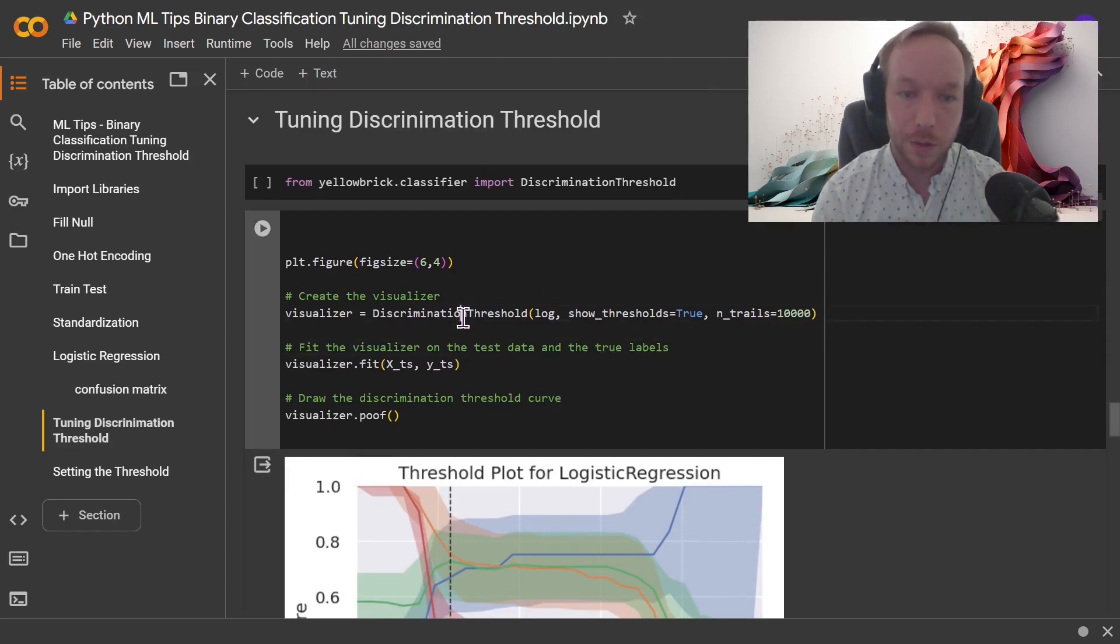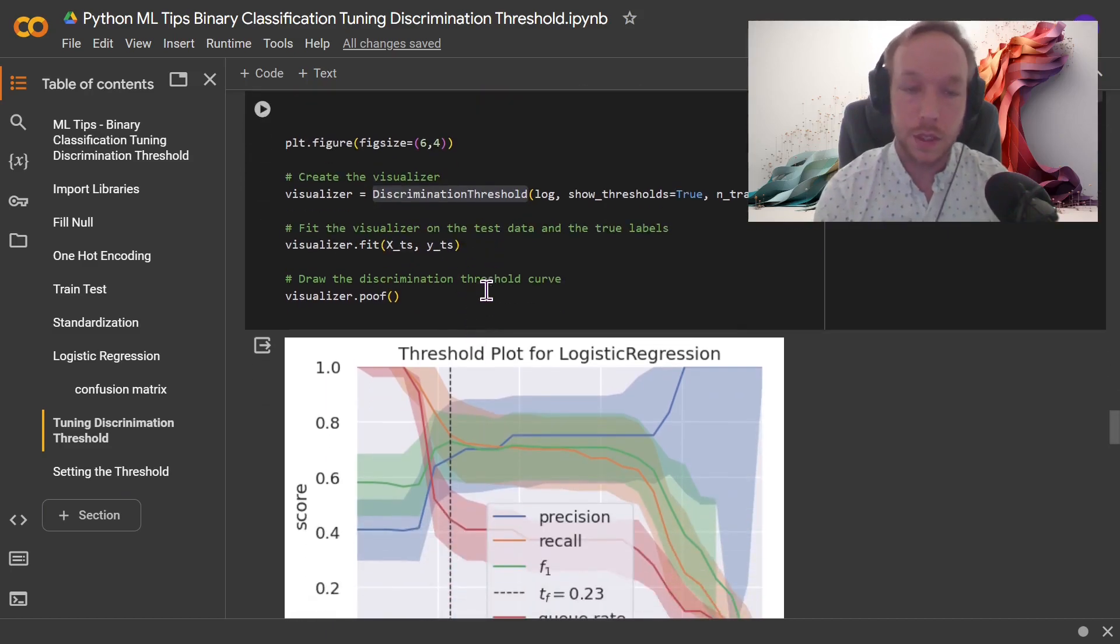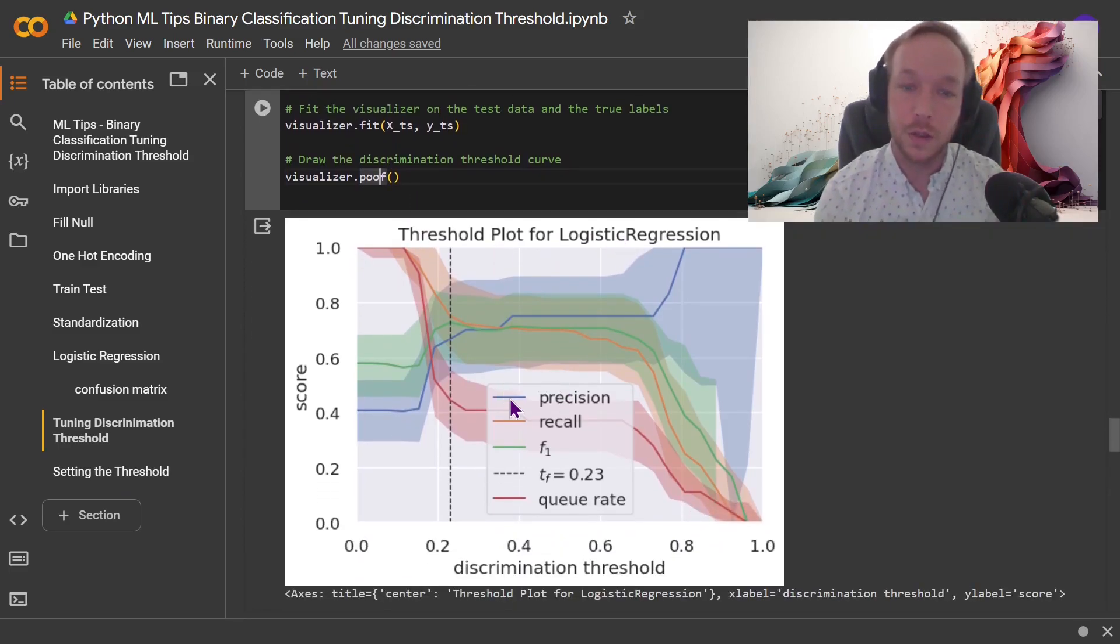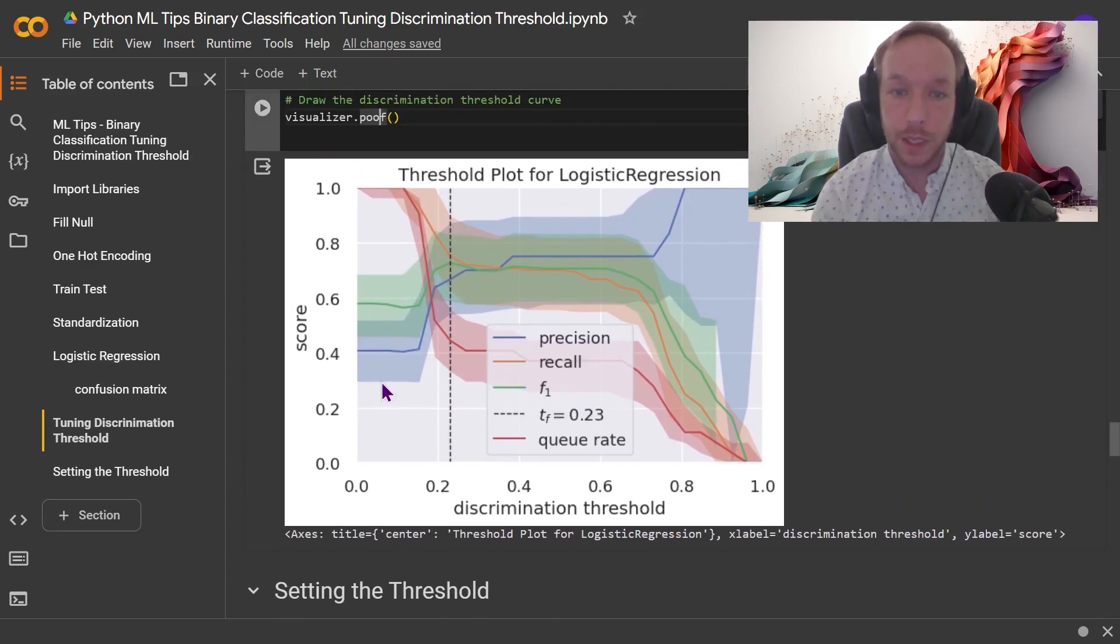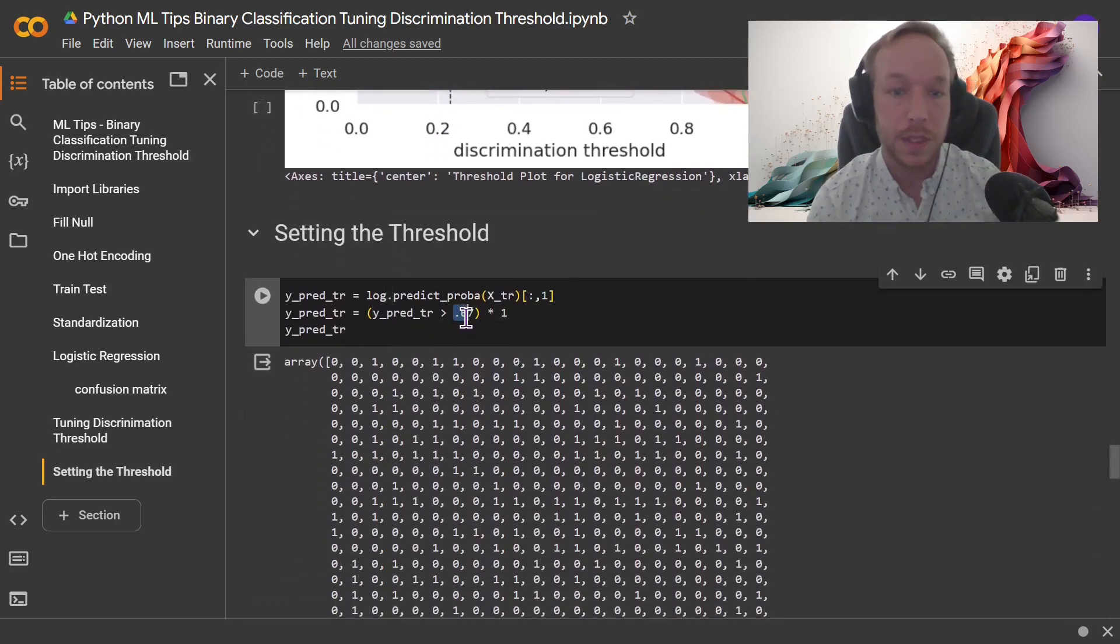Okay, so we're doing a discrimination threshold to look at this. So we're going to use the yellowbrick.classifier discrimination threshold from yellowbrick to visualize this, a great tool for visualizing. So we're going to do discrimination threshold.fit.poof. And so what we're seeing here is what we saw in the presentation right here. So as we increase our threshold, we get better precision and we get worse recall right here. So in this situation, what we're going to do is we're going to turn it up to 67 right here, try and get the best right here. So I'm going to turn it up to 67.